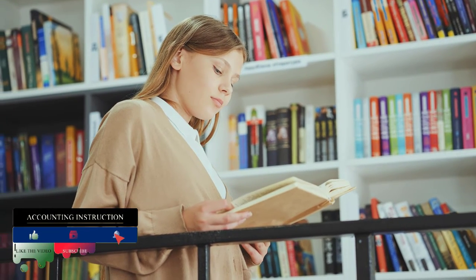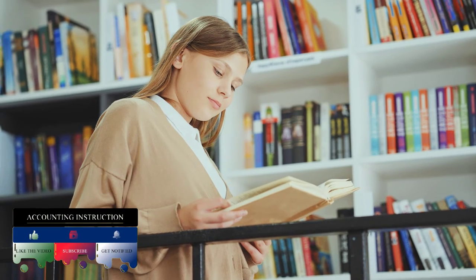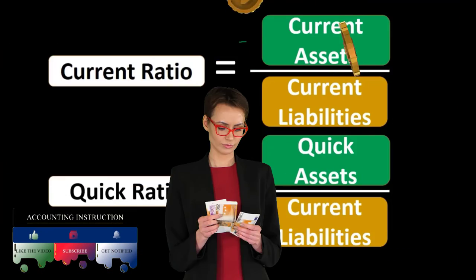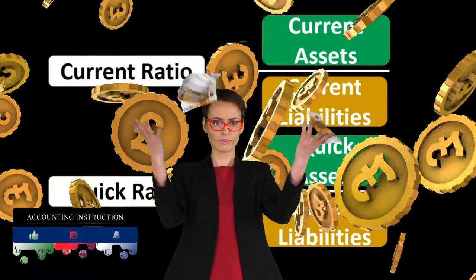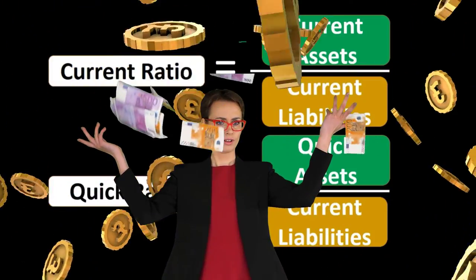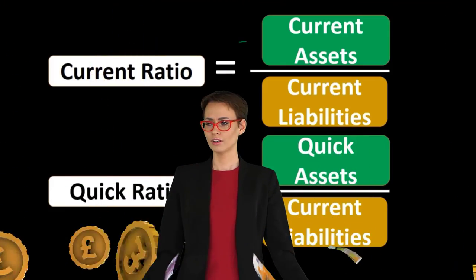Liabilities due within a year, and divide that, divide quick assets by that, or divide current liabilities into the quick assets and see how many times over we can pay the current liabilities with only those quick assets, those very liquid assets.